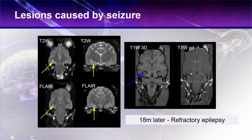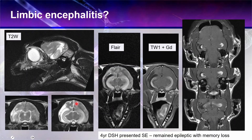Here we have another example. This cat is not actually known — it's uncertain what was going on. It has a few changes we wouldn't expect with straightforward limbic encephalitis because it has other cortical involvement. But there is very definite involvement of the mesiotemporal lobe here. There is also this area which is a complete whiteout. So what is going on — is it completely necrotic or is it inflammatory?